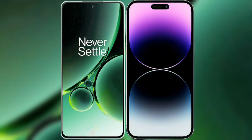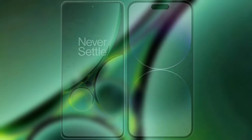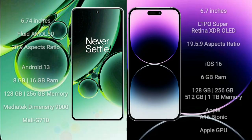I will compare the new OnePlus Nord 3 with the iPhone 14 Pro Max. OnePlus Nord 3 comes with a 6.74-inch flat AMOLED display and 120Hz refresh rate. iPhone 14 Pro Max comes with a 6.7-inch LTPO Super Retina XDR OLED display and ProMotion 120Hz refresh rate.